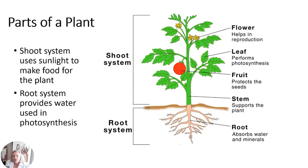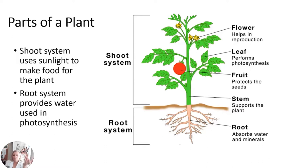Starting at the very bottom with the roots — you see how they get smaller and break off; those are fibrous roots. They get so small so they can absorb every little bit of moisture and nutrient. Stems support the plant. The fruit protects the seeds, where we grow more plants if we get to the seeds. The leaves are where photosynthesis happens, and they come in all different sizes and shapes.